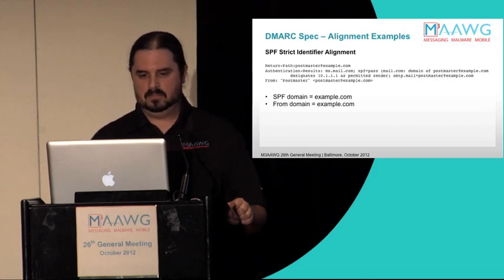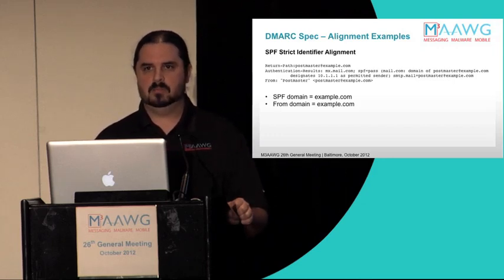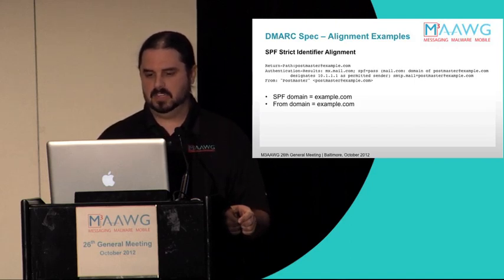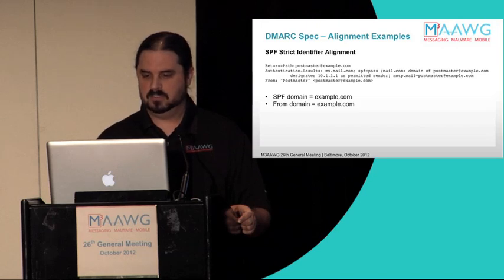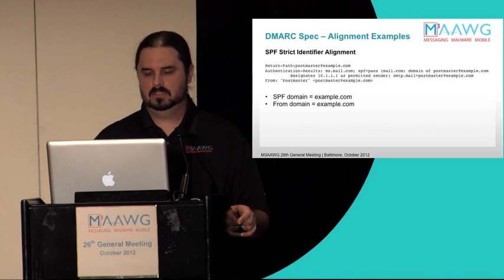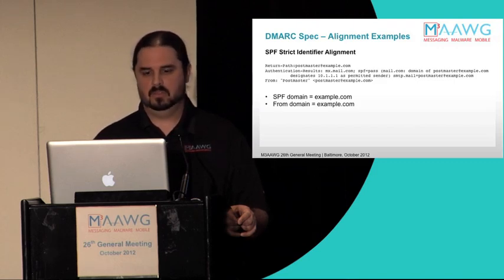Here's an example of strict identifier alignment where the email is not DKIM-signed. The authentication results header shows SPF passed. The MAIL FROM domain is example.com, and the From domain is also example.com. So we have a single authenticated identifier provided by SPF which exactly matches the From domain — therefore this email is in strict alignment according to DMARC.